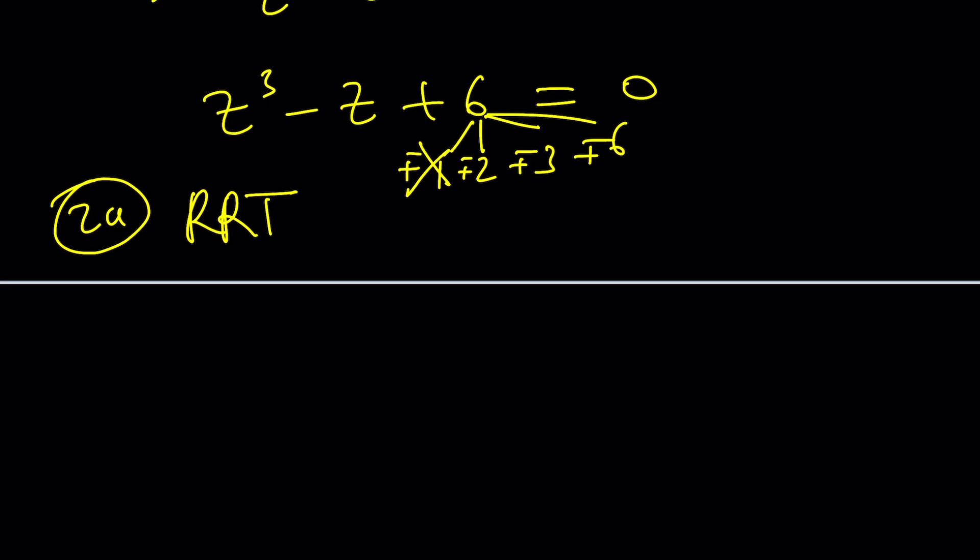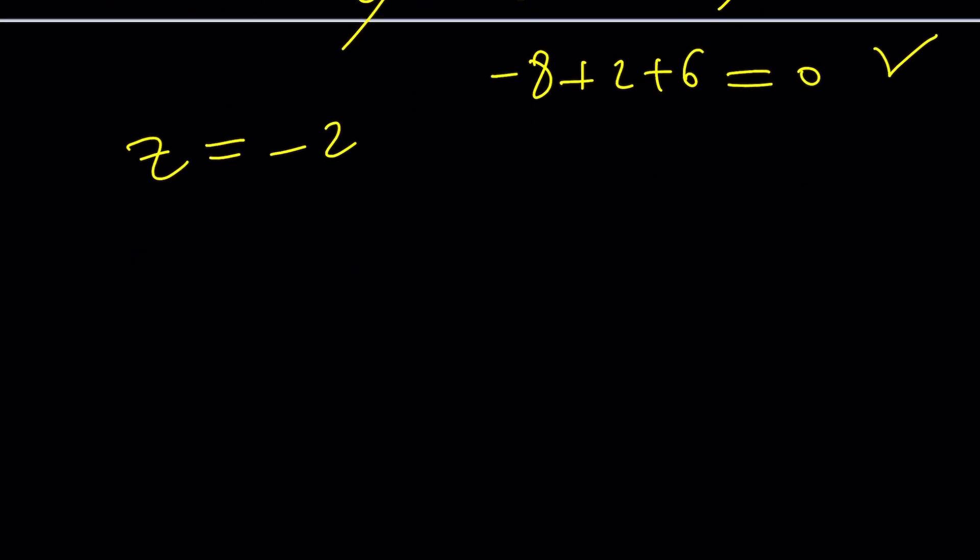That's not 0, so z equals 2 doesn't work. What about negative 2? Negative 8 plus 2 plus 6. Houston, we have a solution. Yay! Z equals negative 2 works. And then you can go ahead and use the factor theorem, because it says if z equals negative 2 is a solution, then z plus 2 is a factor.